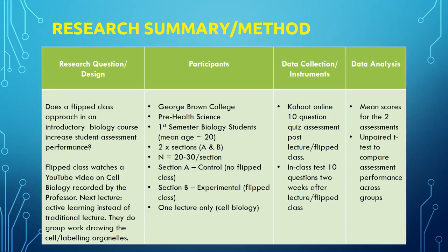Section A is the control group with no flipped class, just the traditional lecture. Section B is the experimental group with the flipped class. The experiment will be only for one lecture on cell biology — this is not a semester-long project, just one lecture.